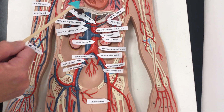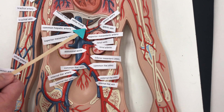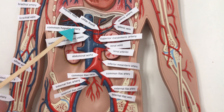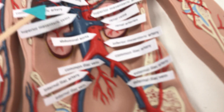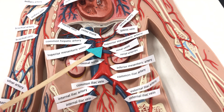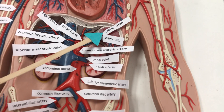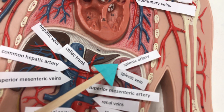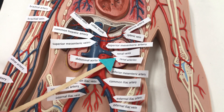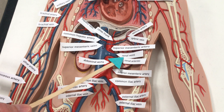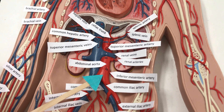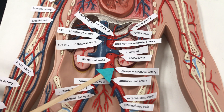Down in the abdominal cavity, we have the celiac trunk. We have the hepatic vein and common hepatic artery — hepatic means liver. We have the superior mesenteric vein and superior mesenteric artery, the splenic artery and splenic vein near the spleen, and the renal artery and renal vein — renal means kidney. This is the abdominal aorta that travels through the abdomen. We also have the inferior mesenteric artery.